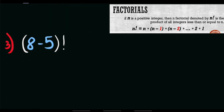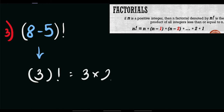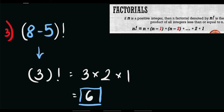For example number 3, we have the quantity of 8 minus 5 factorial. To solve this, let's simplify the values inside our parentheses first. 8 minus 5 equals 3, so we have 3 factorial, which equals 3 times 2 times 1, and that is equal to 6. So the value of (8 minus 5) factorial is 6.